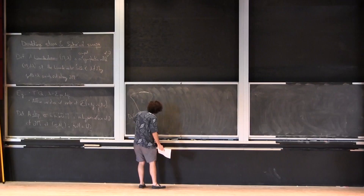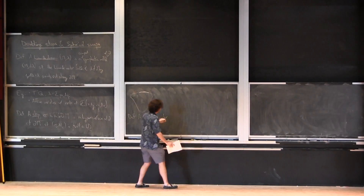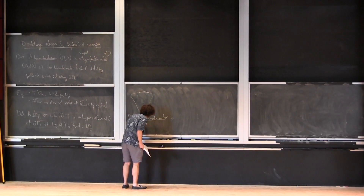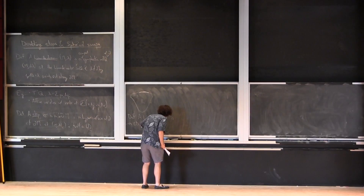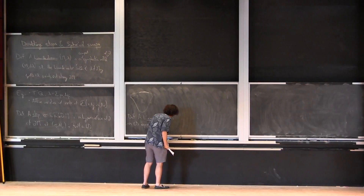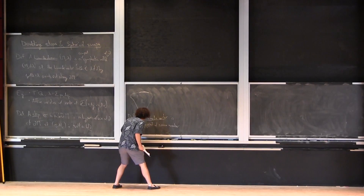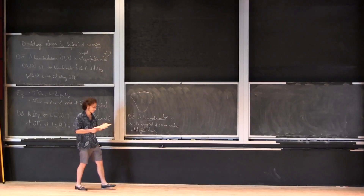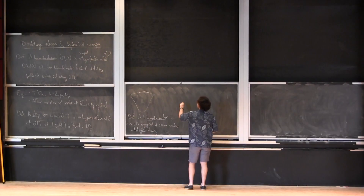So let's make that an approximate definition. A Liouville sector is a Liouville domain equipped with one or more disjoint stops — some number, could be zero. I'll usually talk about a sector and then I'll move the stop around and get families of sectors and things like that.